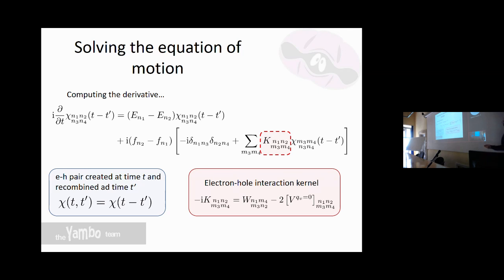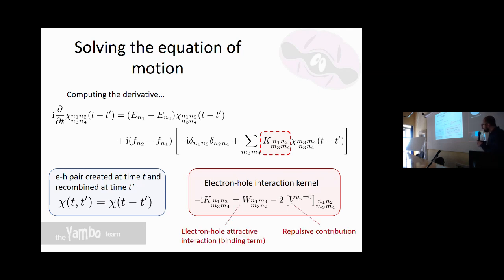The interaction part follows the same approach as for the external field. We arrive at an expression with the non-interacting part plus the rest: the external field contribution and the kernel K — which is W minus v as described before. We are still in the time domain, but in linear response this depends only on the difference of the two times, which will be useful for the Fourier transform. The attractive interaction and the repulsive exchange are both already appearing here, though the exchange is typically much smaller than the binding term for strongly bound excitons.